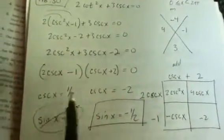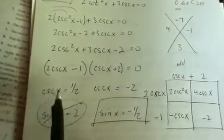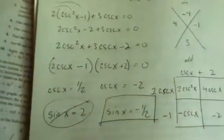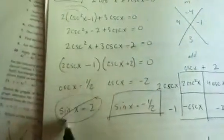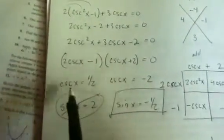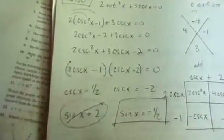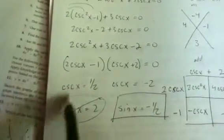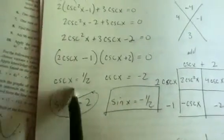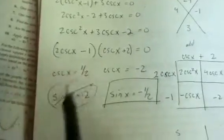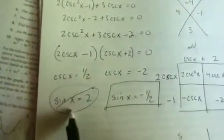Zero product property gives me cosecant x equals a half or cosecant x equals negative 2. And then my method that I like that seems the simplest to me is to flip both sides of the equation upside down or take the reciprocal of the left and the right-hand side. So, if I take the reciprocal of cosecant x, I get sine x and the reciprocal of the right-hand side is 2.